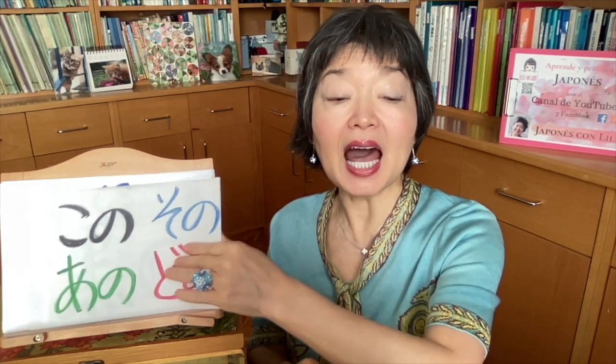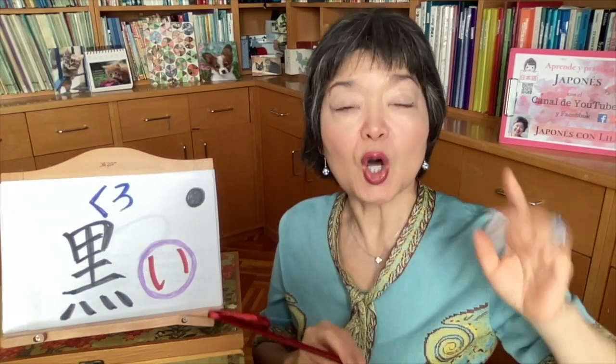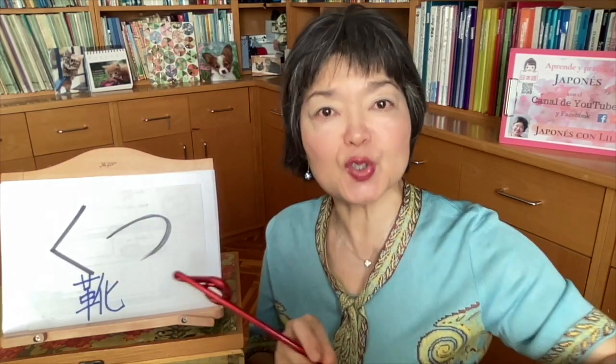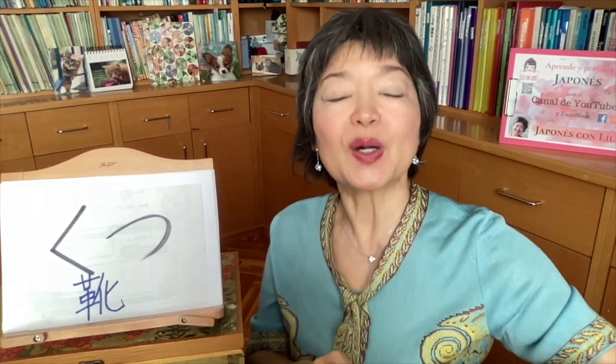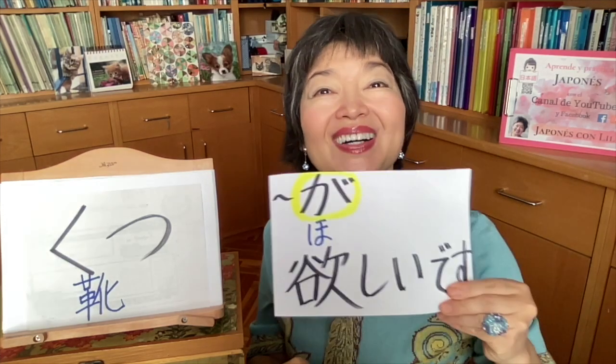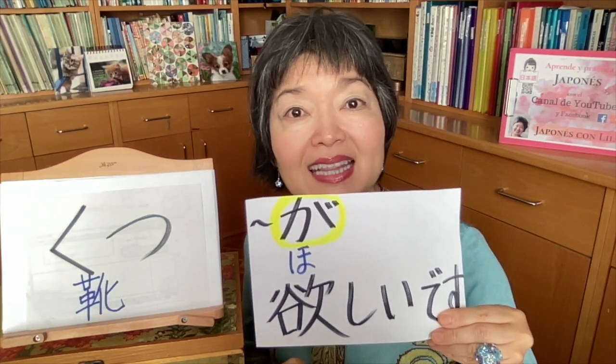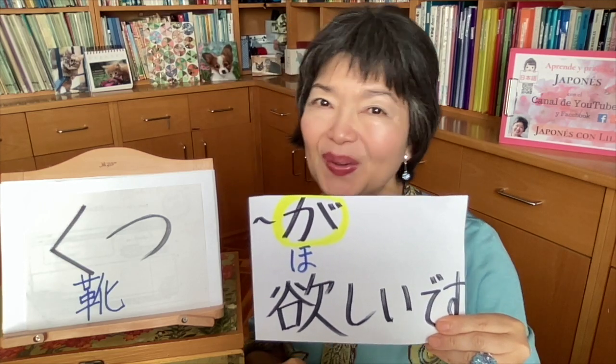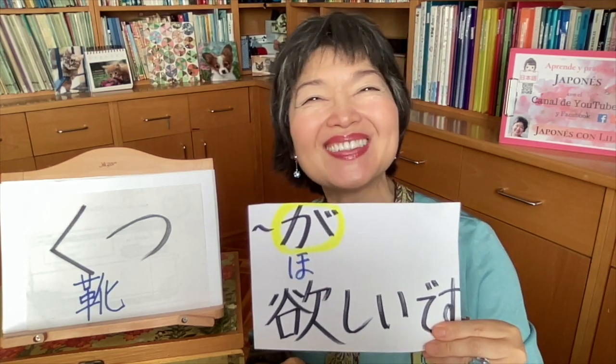If I want these black ones, I say: この 黒い 靴 が ほしいです (kono kuroi kutsu ga hoshii desu) — 'I want these black shoes.' 黒い (kuroi) = black. この = this.